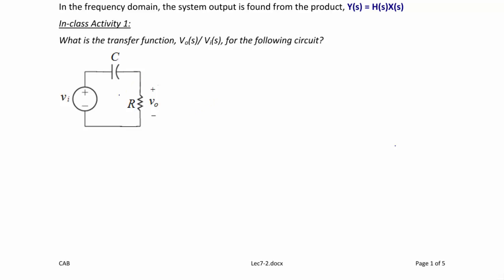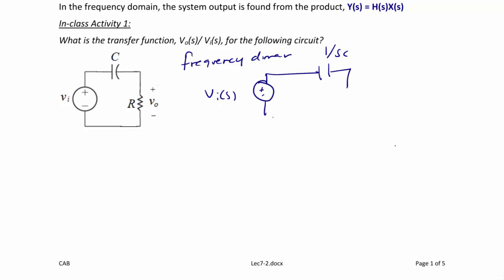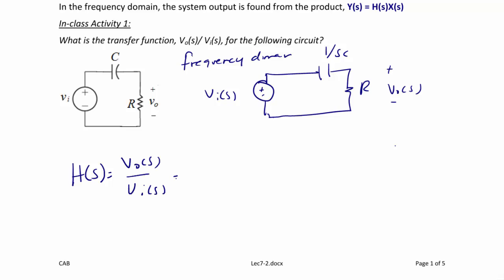Let's look at an example. Find the transfer function for the following RC circuit. We redraw the circuit in the frequency domain: the input is Vi(s), the impedance of the capacitor is 1 over sC, the impedance of the resistor is R, and the voltage across the resistor is V0(s). Using the voltage divider, H(s) = V0(s)/Vi(s) = R over (R + 1/sC), which can also be written as sCR divided by (sCR + 1). We assume zero initial conditions, so there are no initial voltages for the capacitor.